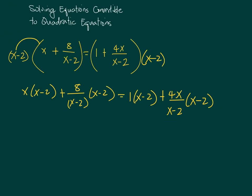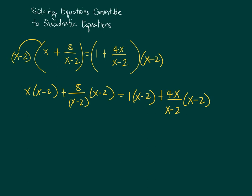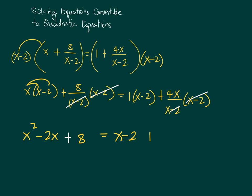From here you simplify again by distribution — this gives x squared minus 2x. Note how the x minus 2 and x minus 2 cancel, and that gives you a plus 8. On the other side, 1 times x minus 2 is x minus 2, and you also cancel x minus 2 and x minus 2, so that gives you 4x. Then continue simplifying your equation: x squared minus 2x plus 8.